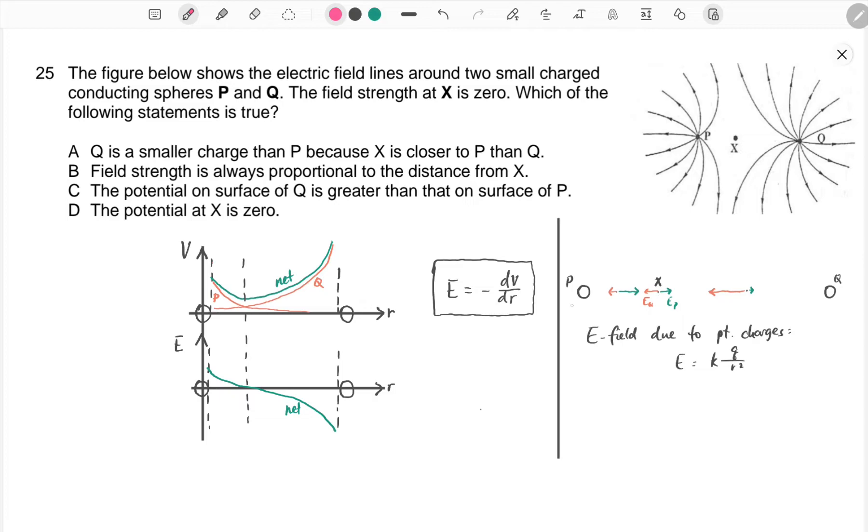Point X is closer to P, and if you draw out the electric field strength at all these points, point X being closer to P means that here, the E-field due to charge P managed to cancel out that due to charge Q, and that will mean that charge Q will have a greater charge compared to charge P.